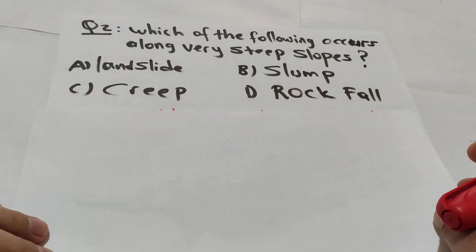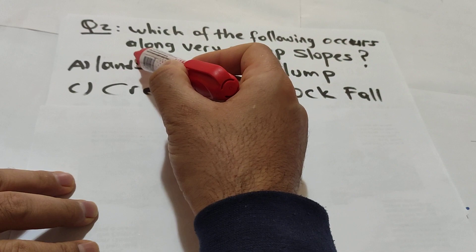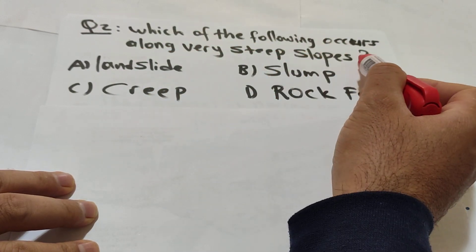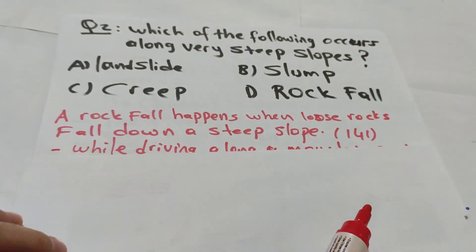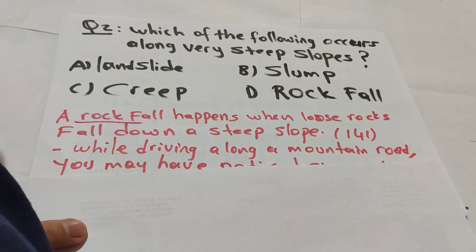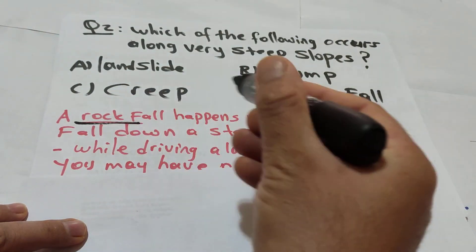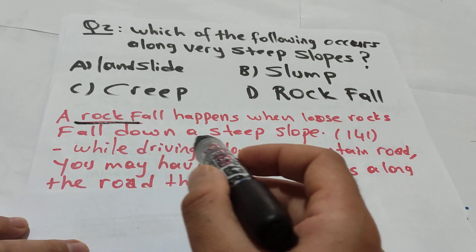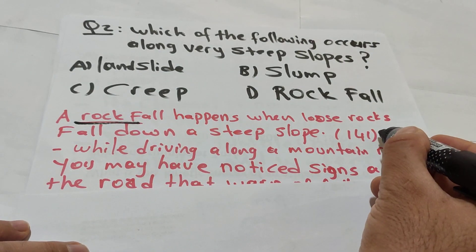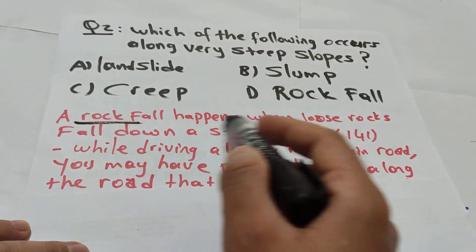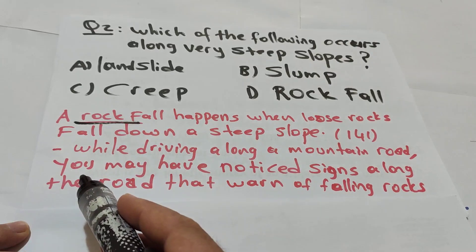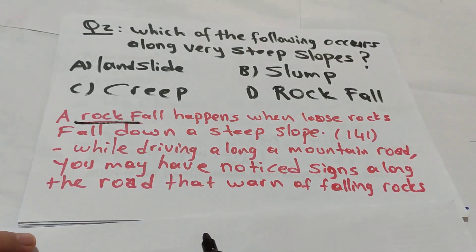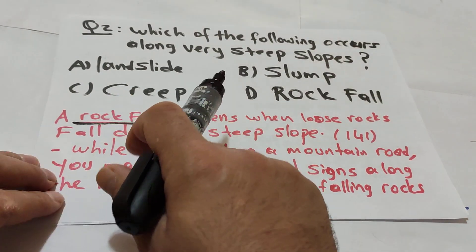Question 2: which of the following occurs along very steep slopes? Landslide, slump, creep, rockfall. Let us check. Rockfall. It has to be rockfall. Rockfall happens when loose rocks fall down a steep slope, page 141. If you check you can see the sentence: while driving along mountain road you may have noticed signs along the road that warn of falling rock. The answer will be rockfall.